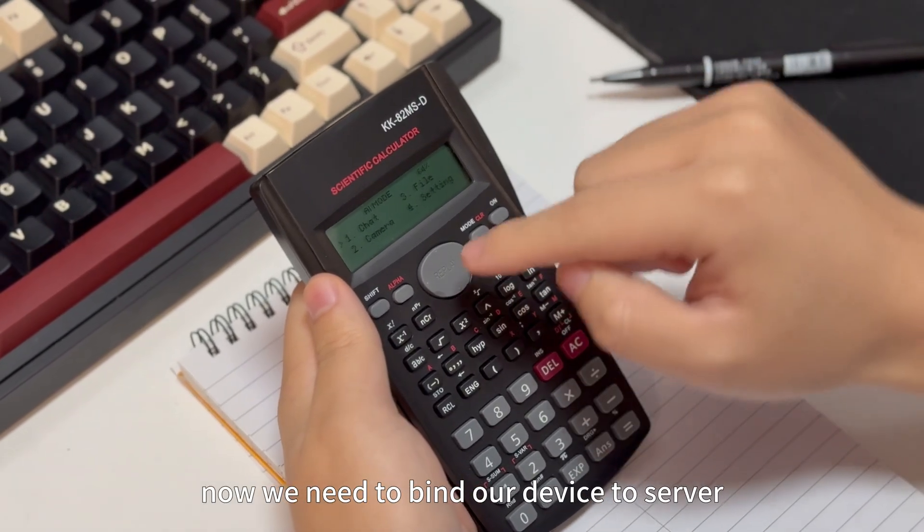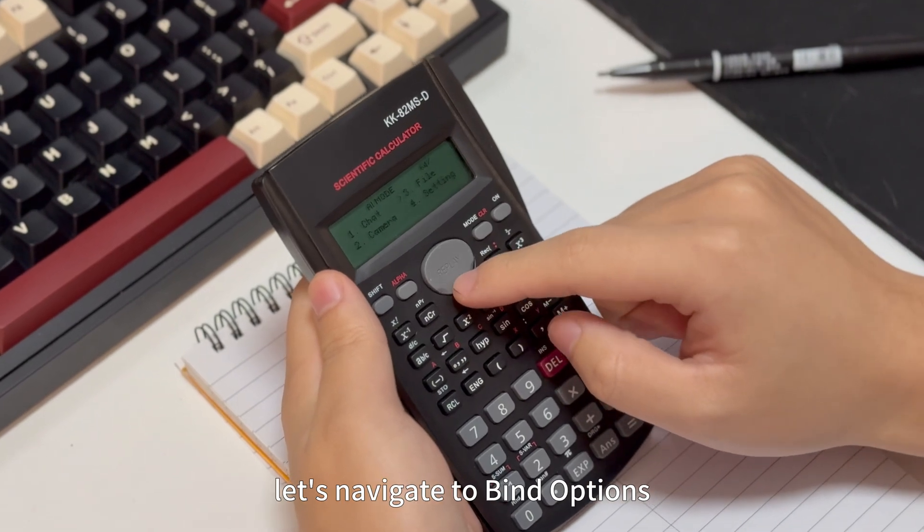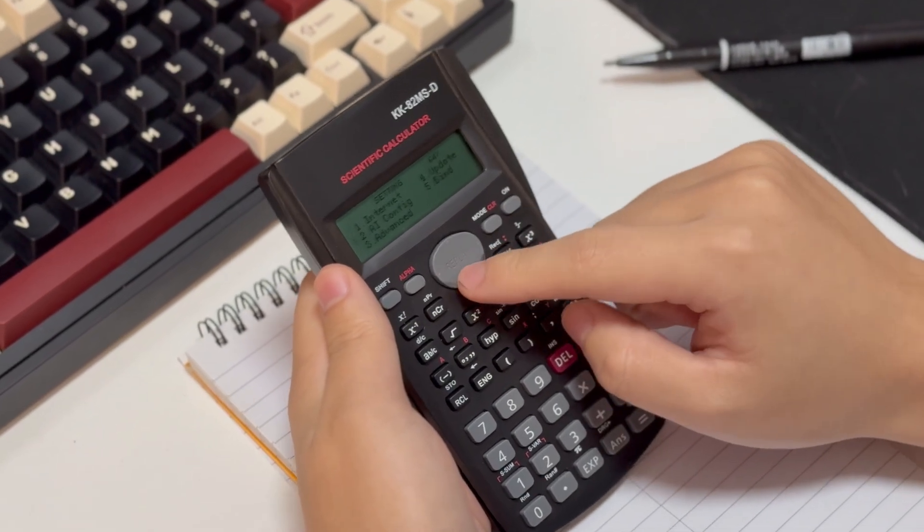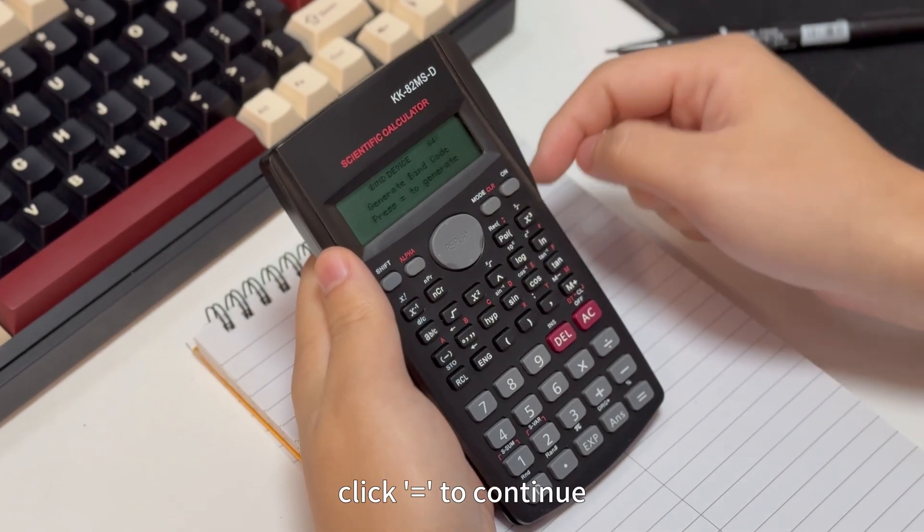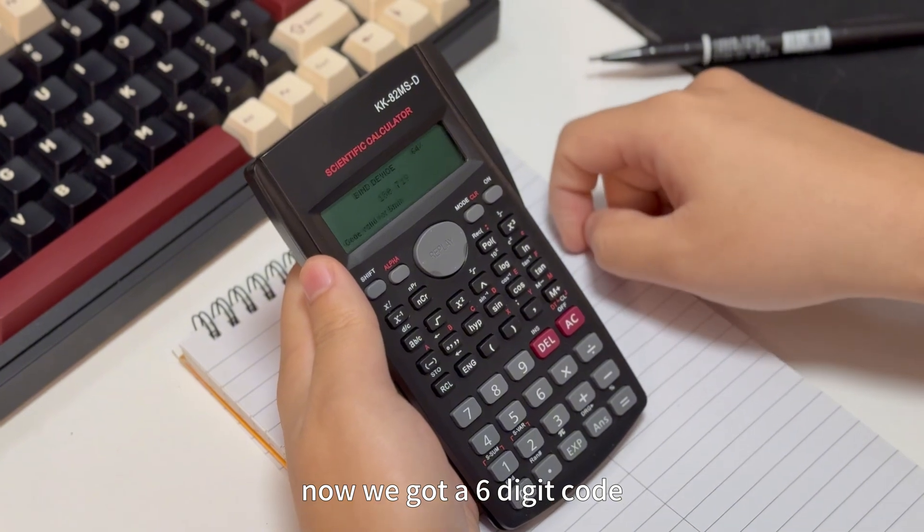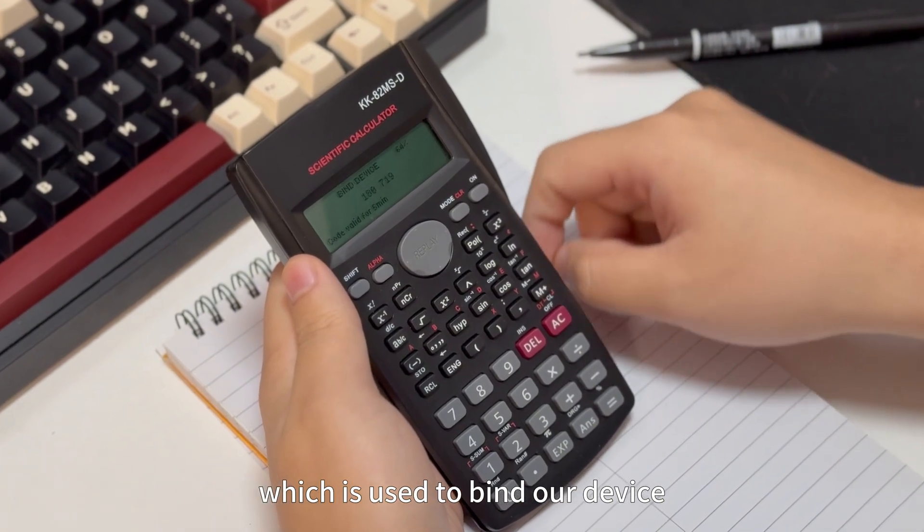Now we need to bind our device to server. Let's navigate to bind options. Click equal to continue. Now we got a 6-digit code which is used to bind our device.